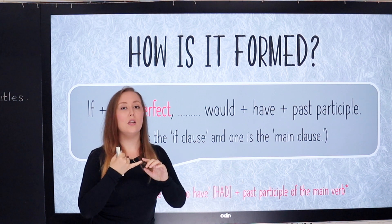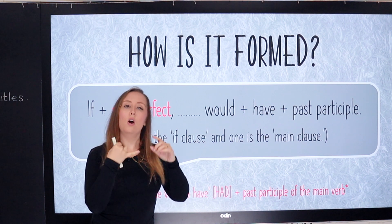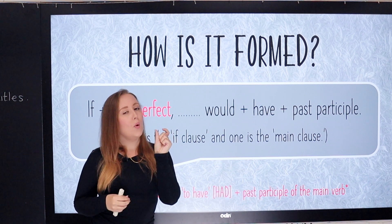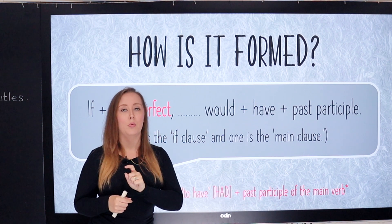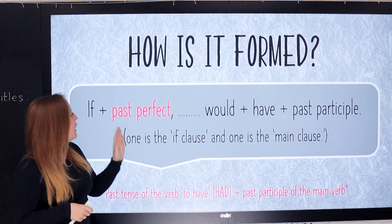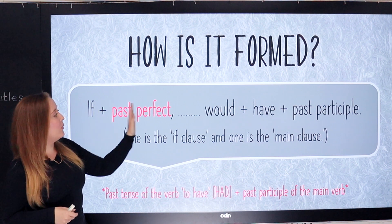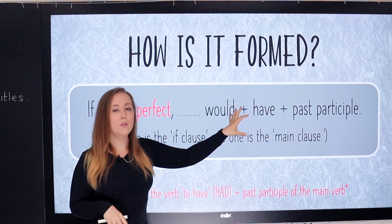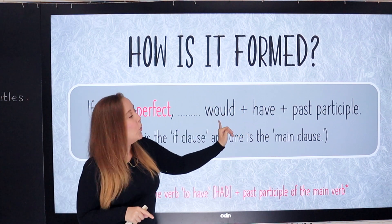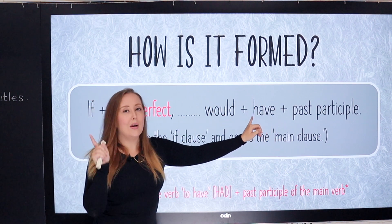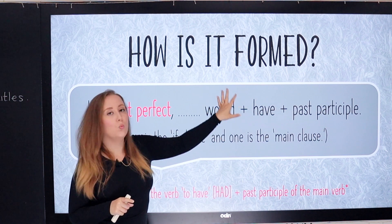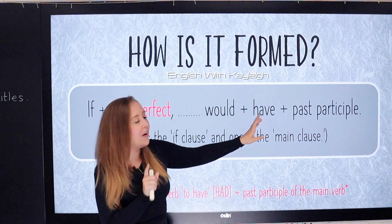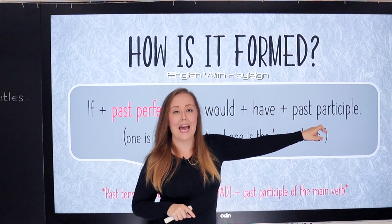For example, if we look at the verb 'break' — break, broke, broken — 'broken' is the past participle form. So we use 'if' with the past perfect. Then in the main clause, we use 'would have.' In the second conditional we just use 'would' with the verb, but in the third conditional we use 'would have' plus the past participle again — 'broken' being the past participle of 'break.'